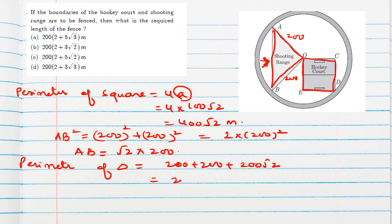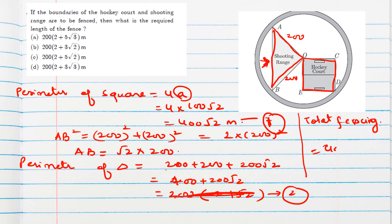If we take 200 common or make it 400, then take 200 common. So 200, 2 plus root 2 will remain. So this is the perimeter of square. Now we have to add. Better we will keep this only. If we add here, root 2, 2 terms are there. Total fencing will be 400 root 2 plus 400 plus 200 root 2. So this can be added, 400 plus 600 root 2.